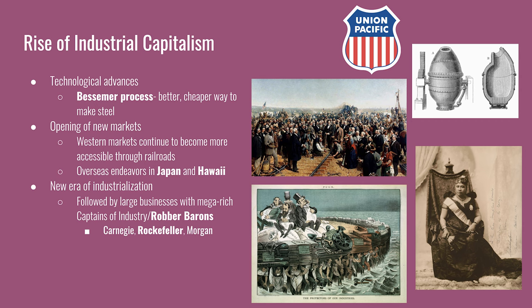The Bessemer process was a better and cheaper way to make steel. Steel drove this industrial expansion with the construction of railroads and factories. The opening of new markets refers to the markets in the west of the United States. A transcontinental railroad was completed in 1869, and markets from California to the Midwest and the East Coast are all now connected. It speeds up the ability to purchase and transport goods, leading to people purchasing more goods and, subsequently, economic expansion.